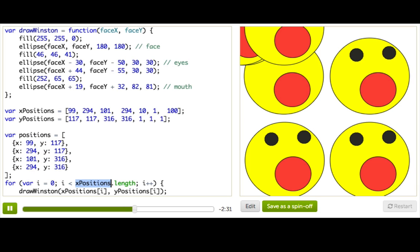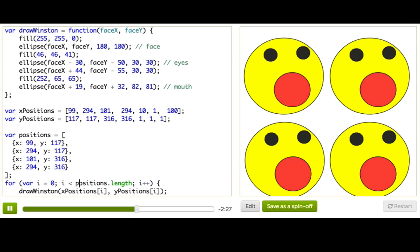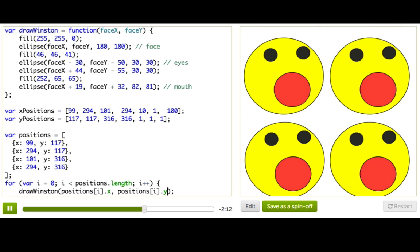And so down here in our for loop, we'll just change this to iterate through positions.length. And then we'll pass in the object. Now, right now it's passing the entire object, but we want to pass the x and the y. So we need positions[i].x and positions[i].y. Ta-da! Now we can get rid of these old cluttered arrays.